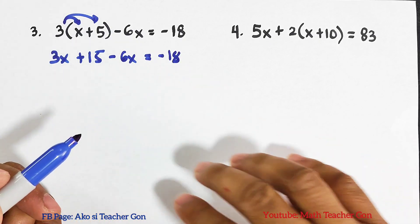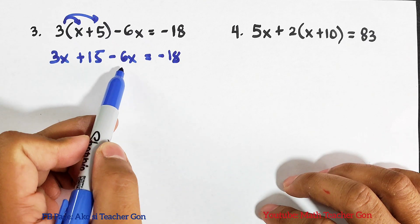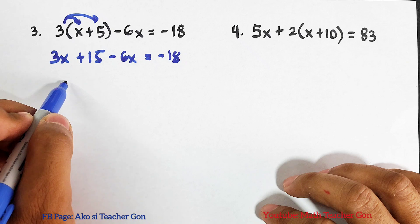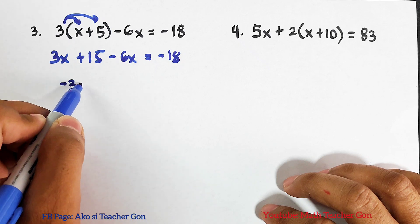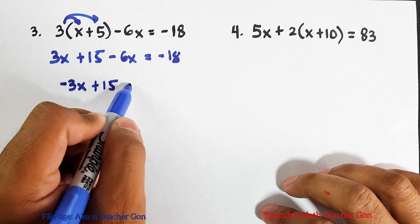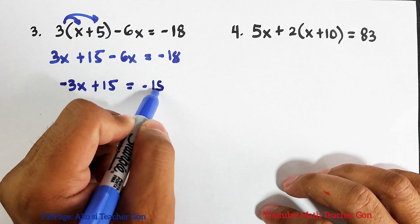Here, what we need to combine is 3x and negative 6x. 3x minus 6x, this is negative 3x plus 15, copy 15, is equal to negative 18.